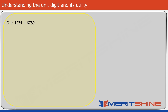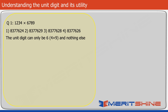Let's begin. Try to do this question — here are your options. Can you quickly tell me the answer in just 5 seconds? The correct answer will have 6 in its unit digit, because 9 into 4 gives us 36, so the unit digit of the answer has to be 6. Hence our answer has to be option 4.